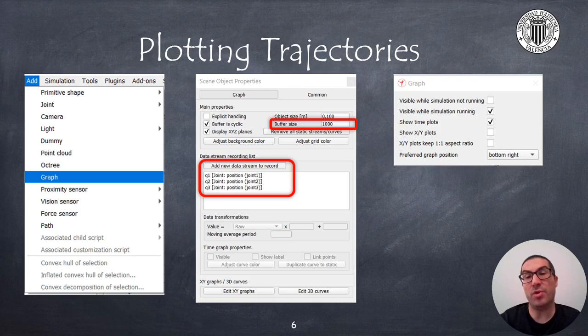In order to show the time plot of the position of the joints we need to add a graph to our scene. In this case we must add three data streams to visualize the position of the first three joints. Make sure that you have activated the checkbox to show the time plots and set a proper buffer size as well as the desired color for each of the joints.